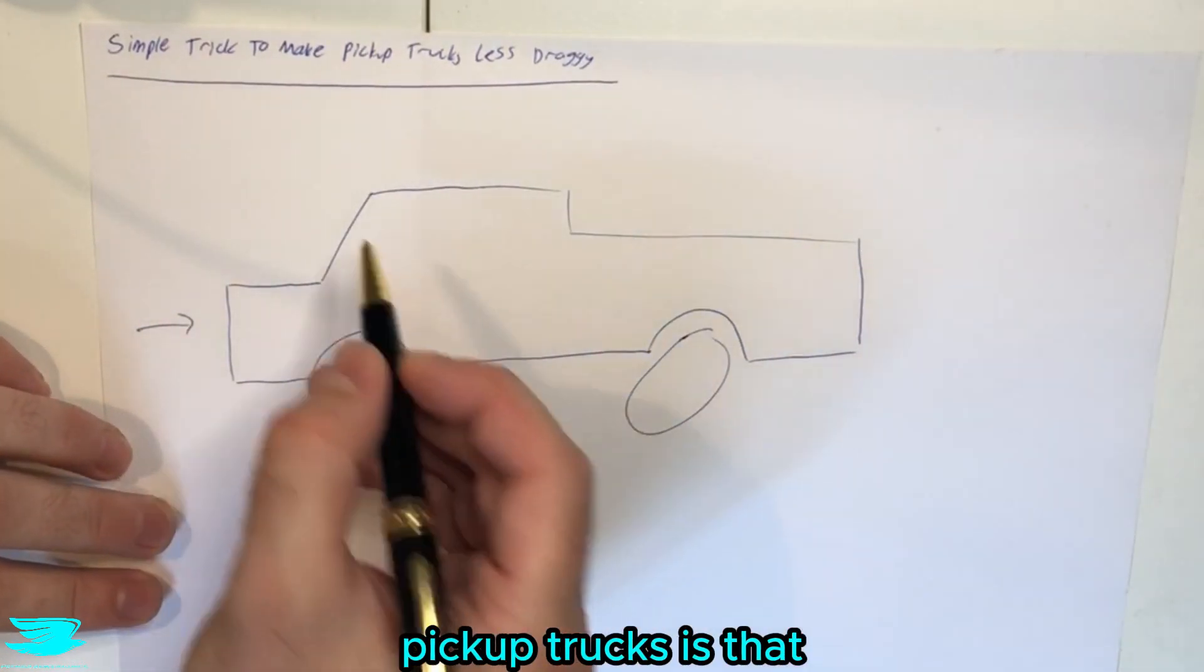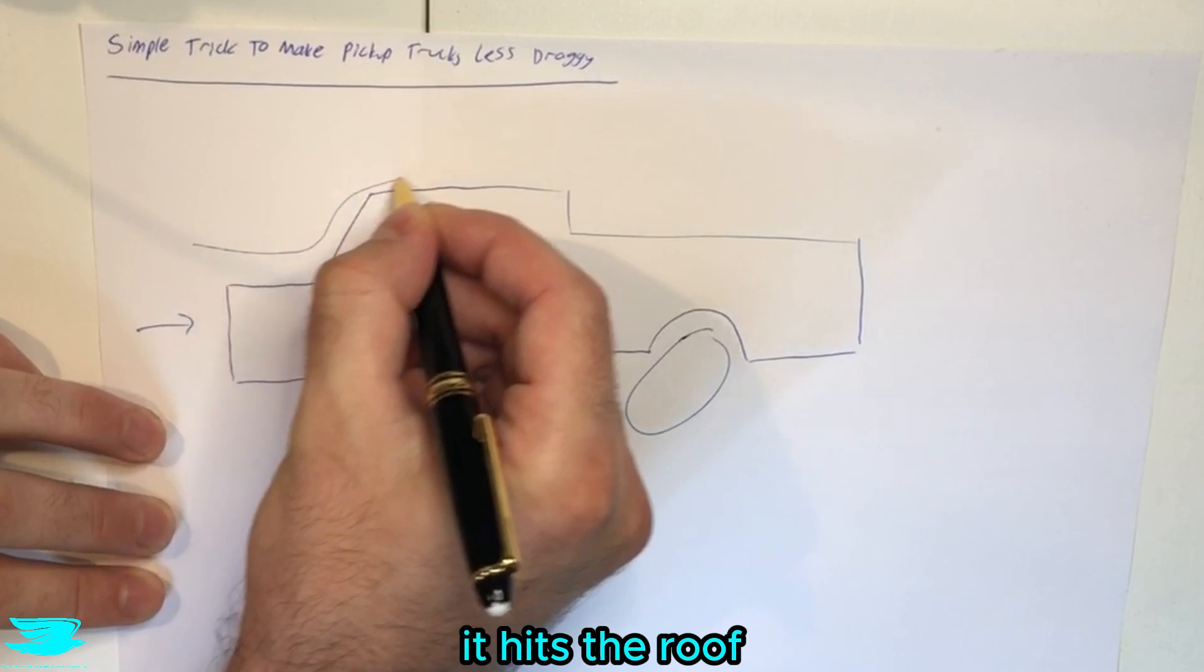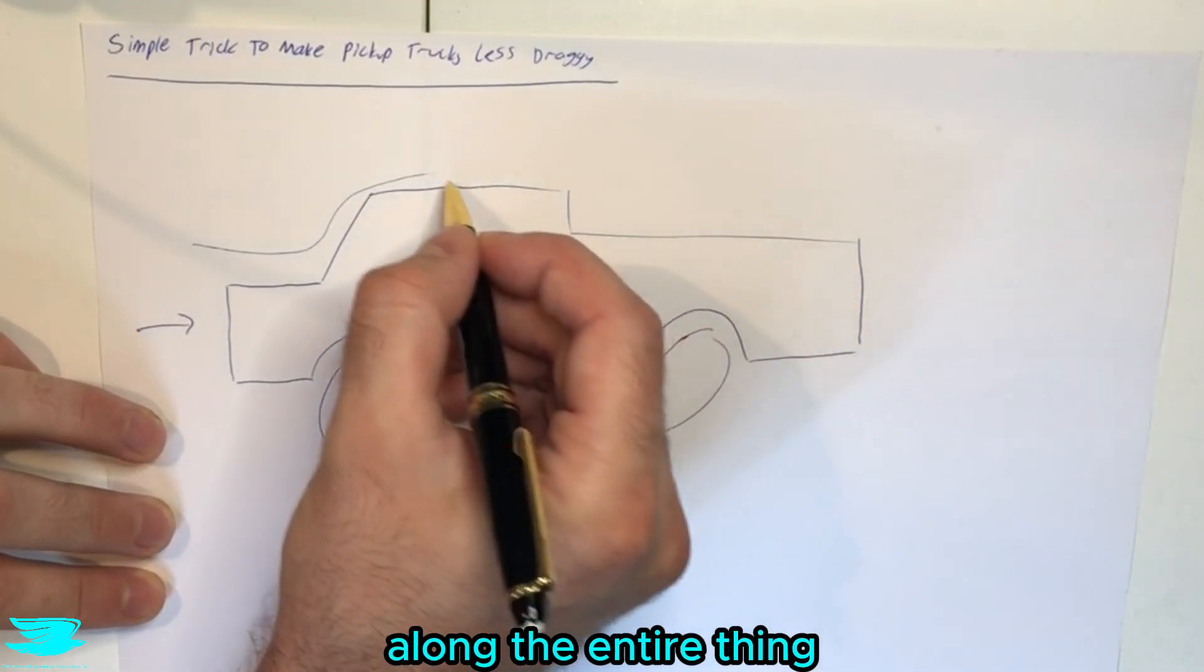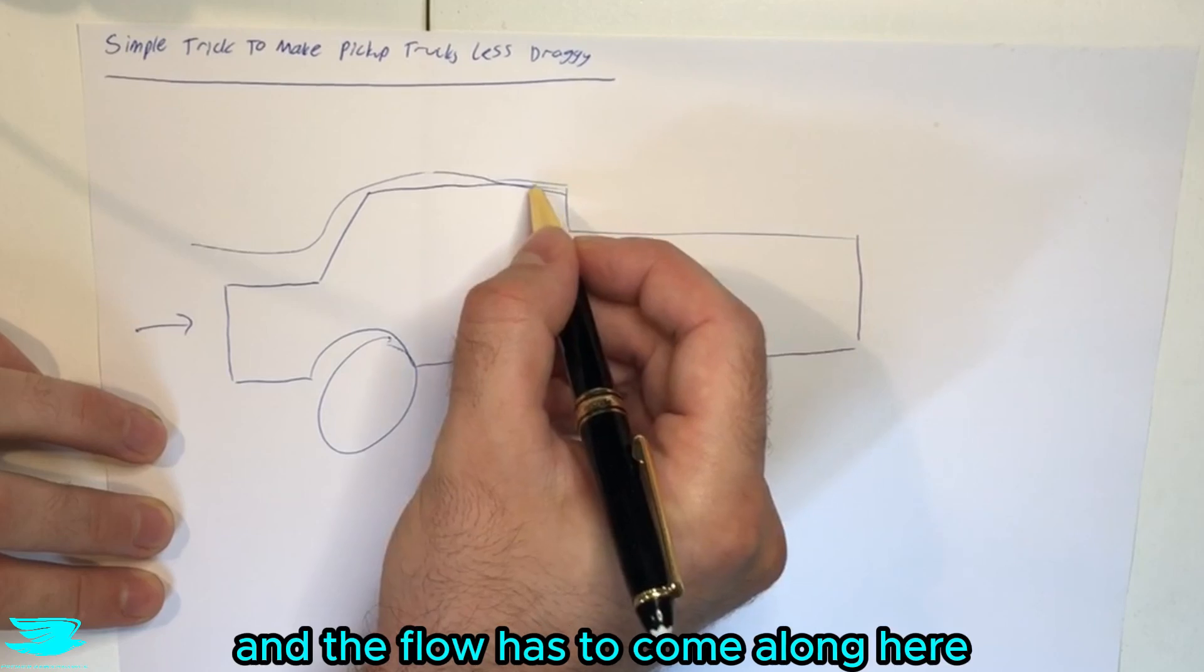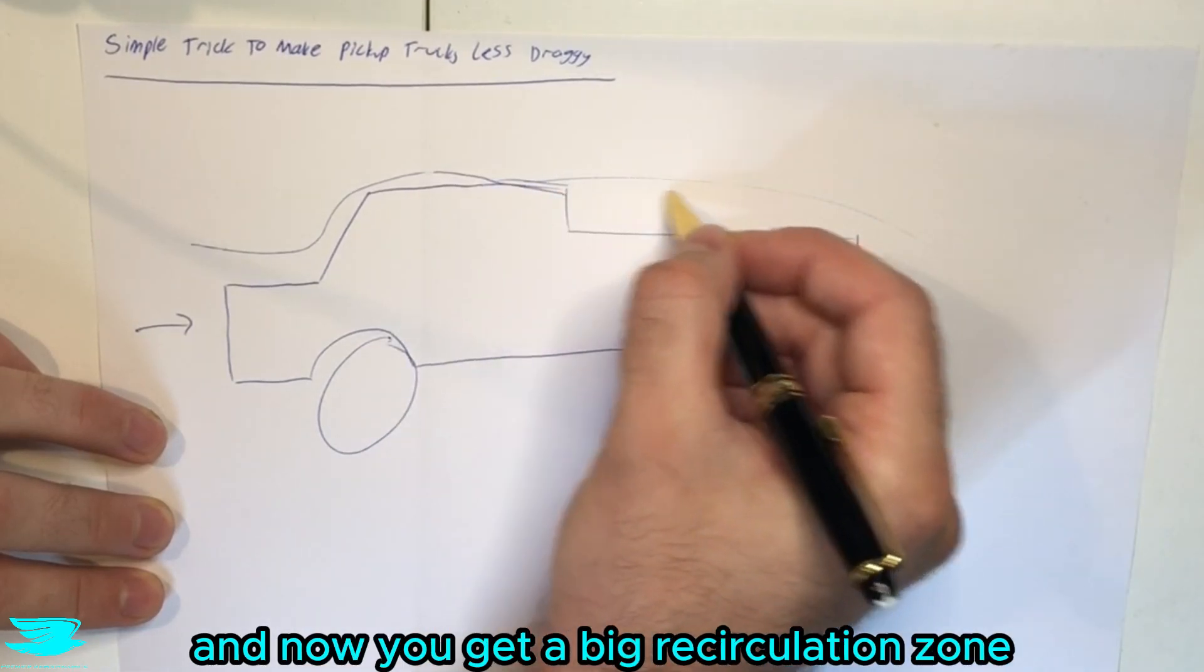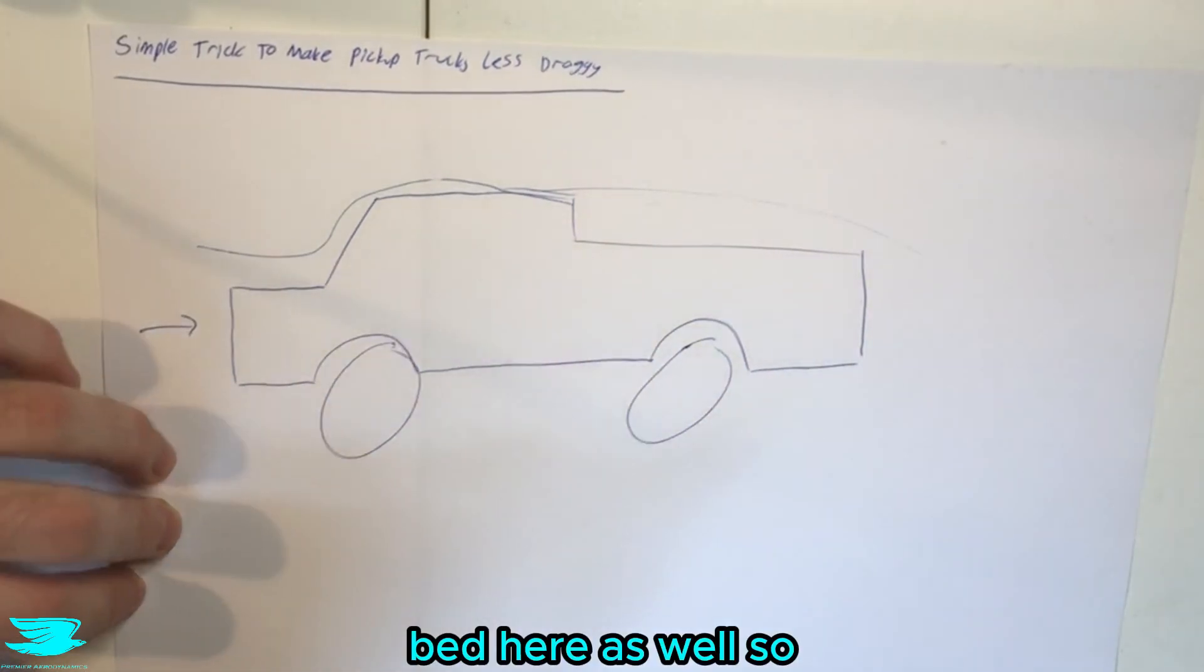The main problem with pickup trucks is that as the flow comes along, it hits the roof and hopefully stays attached along the entire thing. Then as it gets to the back it separates because you have this bed here and the flow has to come along here and now you get a big recirculation zone and usually a big recirculation zone behind the bed here as well.